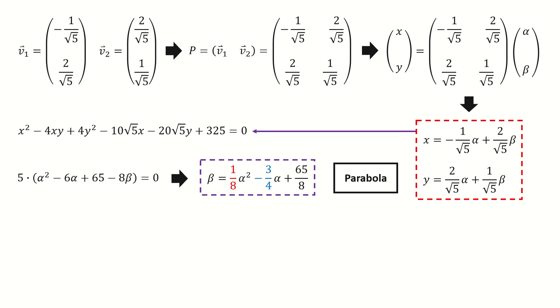Now let's find the equation for the axis of symmetry. From this parabola equation, we can easily find the axis of symmetry in alpha-beta coordinate. So alpha equals 3 is the axis of symmetry in alpha-beta coordinate.